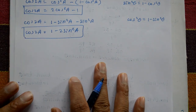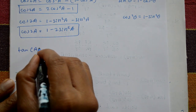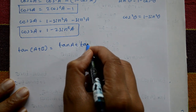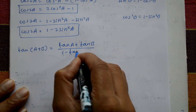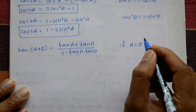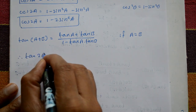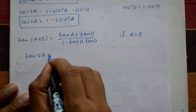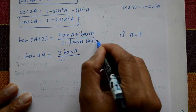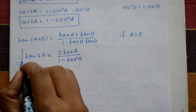Next, we have the formula tan(a+b) equals tan a plus tan b divided by 1 minus tan a into tan b. Just take b equal to a. Therefore tan(a+a) is tan 2a. tan a plus tan a is 2 tan a, divided by 1 minus tan a into tan a, which is tan squared a. So tan 2a equals 2 tan a divided by 1 minus tan squared a.